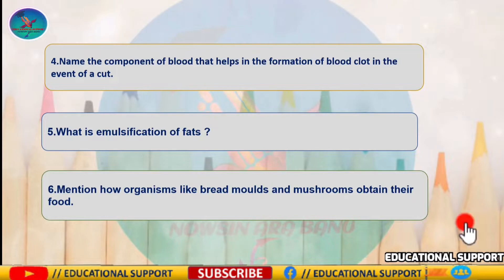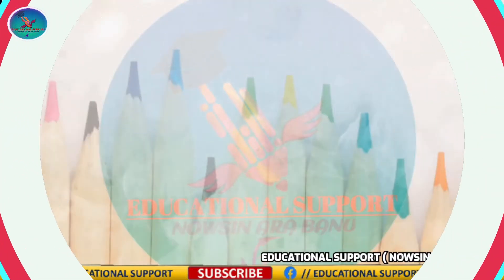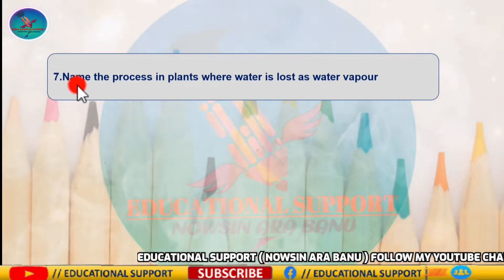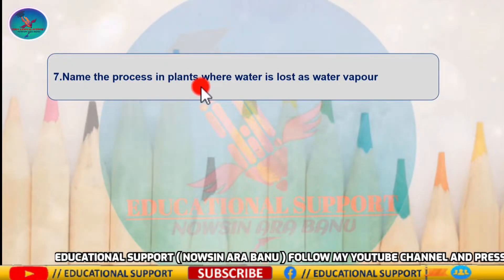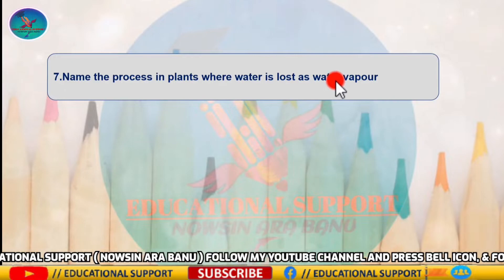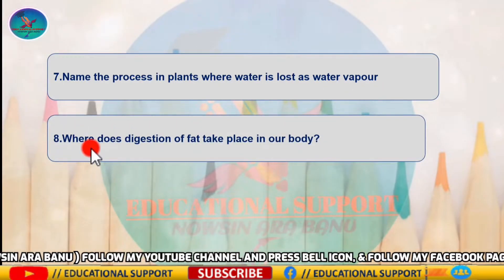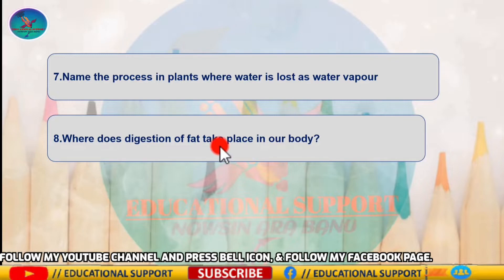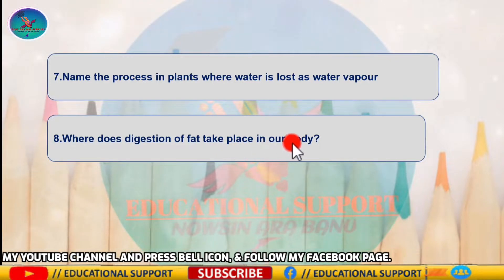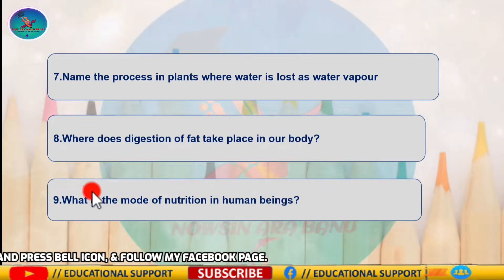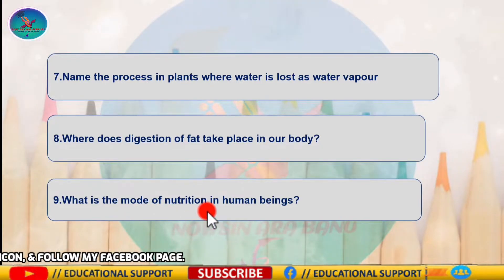Question five: what is emulsification of fats? Question six: mention how organisms like red moulds and mushrooms obtain their food. Question seven: name the process in plants where water is lost as water vapour. Question eight: where does digestion of fat take place in our body? Question nine: what is the mode of nutrition in human beings?